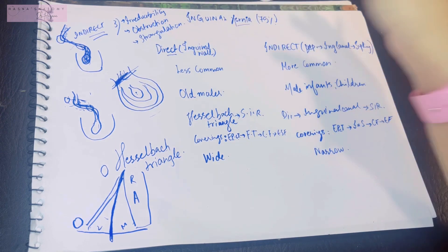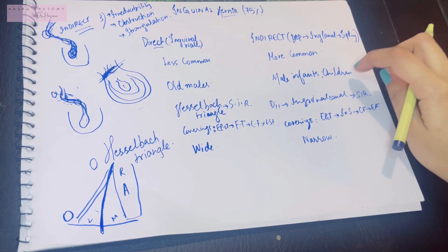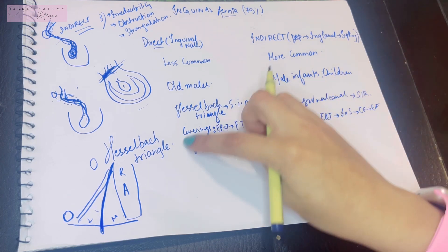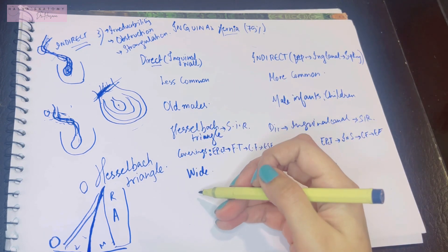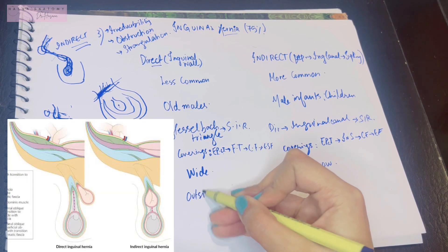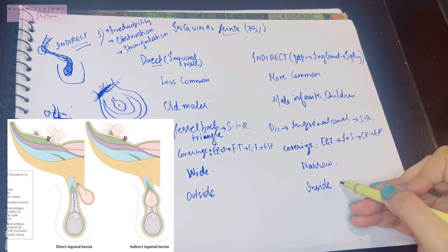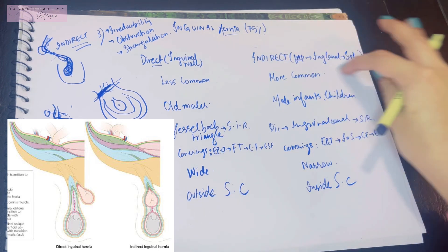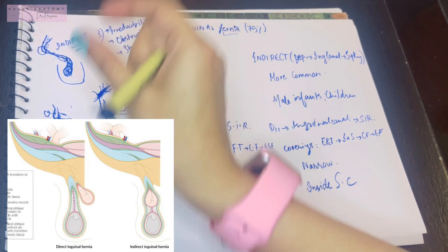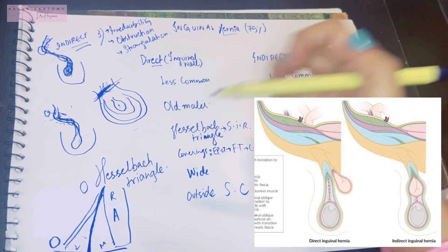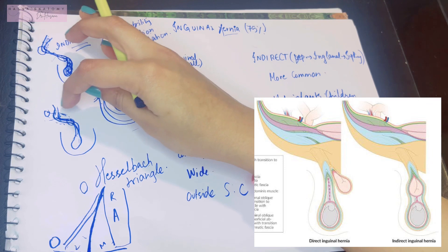Because of the risk of these complications, hernias should be operated on as soon as possible. Indirect inguinal hernia has a greater risk of strangulation due to its narrow neck. Another important difference is that direct inguinal hernia lies outside the spermatic cord, whereas indirect inguinal hernia lies within the spermatic cord, as it traverses the same route as the spermatic cord and gets embedded in the same fascias.